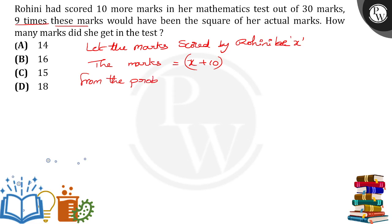we get 9 times (x+10) is equal to the square of the actual marks, which is x². We get 9x + 90 = x². If I transpose all the LHS and RHS, we get x² - 9x - 90 = 0.